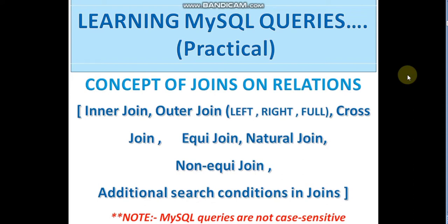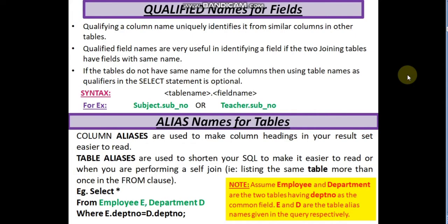Concept of joins and relations — we will be covering all these practically, showing each and everything. Remember, MySQL queries are not case sensitive, so keep that in mind. Before starting with joins, let me tell you about qualified names for fields. Qualifying a particular column name uniquely identifies it from similar columns in other tables. Qualified field names are very useful in identifying a field if the two joining tables have fields with the same name. If the tables do not have the same column names, then using table names as qualifiers in the select statement is optional.